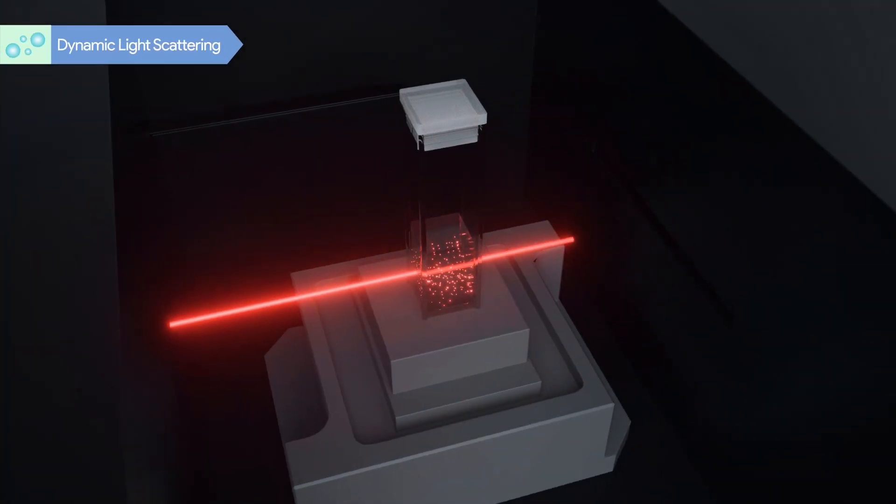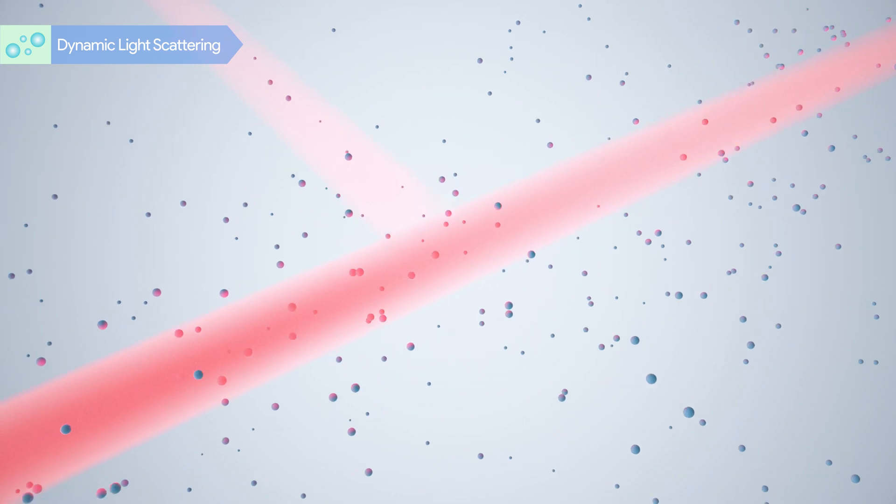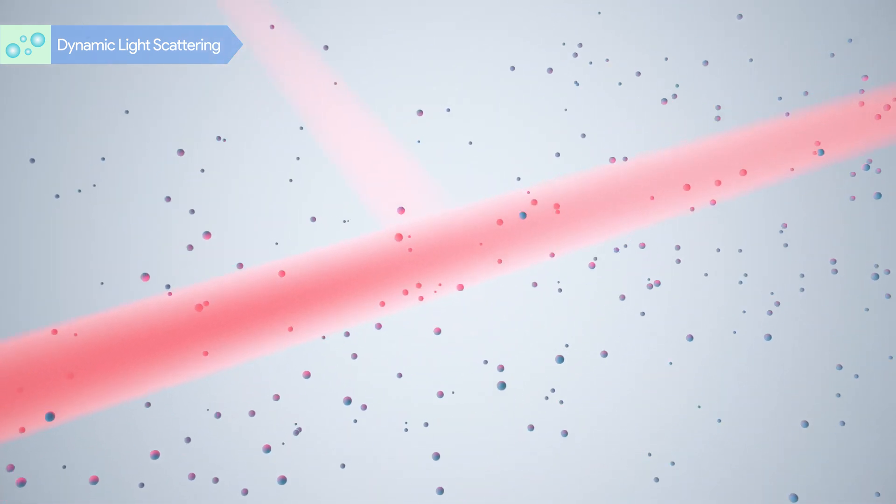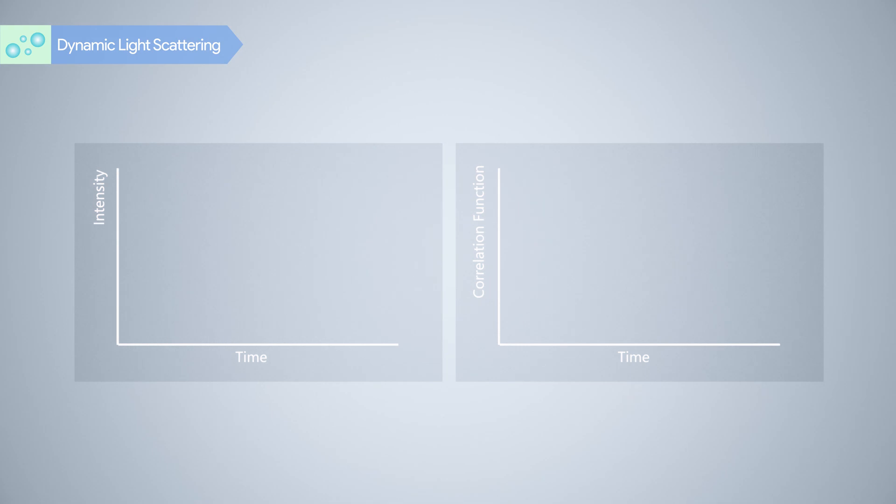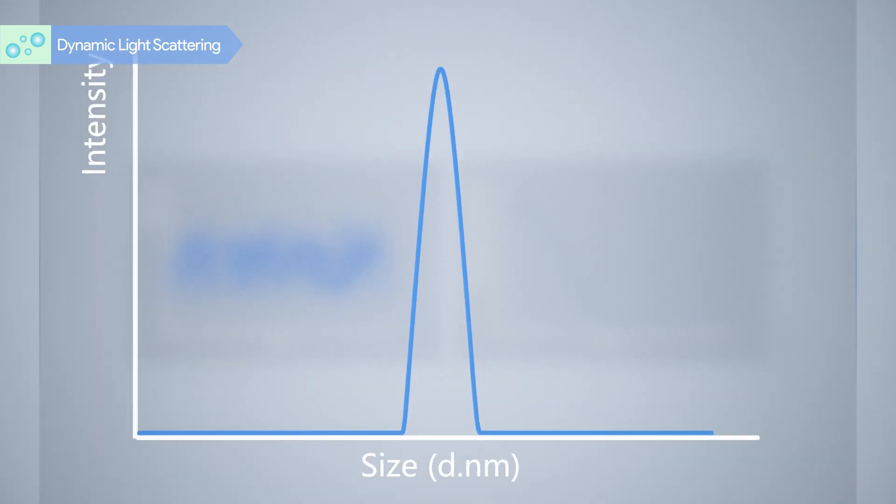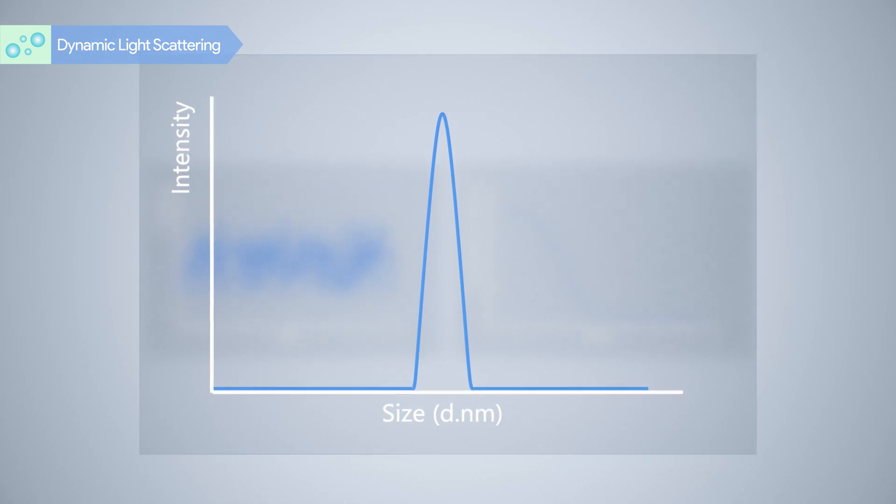Particle Brownian motion causes the intensity fluctuation of the scattered light. DLS measures the fluctuation and, through analyzing its correlation as a function of time, calculates the particle size and size distribution.